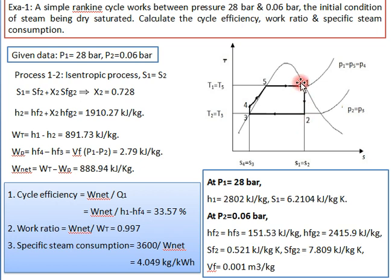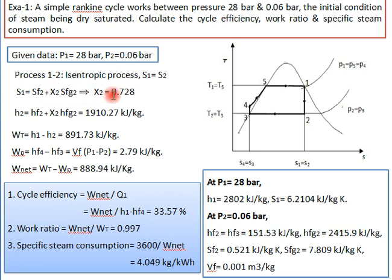For process 1 to 2 (isentropic expansion), entropy remains constant: s1 = s2. Since s2 = sf2 + x2·sfg2, we substitute s1 = 6.2104 along with sf2 and sfg2 to solve for the dryness fraction x2 = 0.728. This means at the condenser inlet, approximately 72.8% is steam and the rest is water.